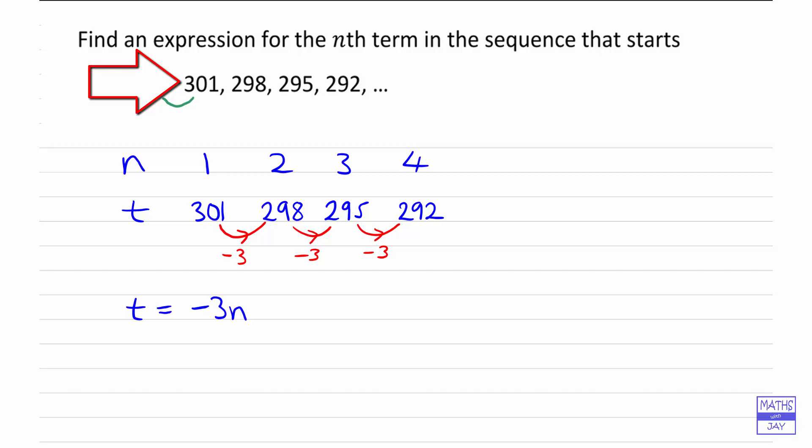Well, instead of subtracting 3 from it, we'd need to add 3 on, wouldn't we? So going in the opposite direction, we're adding 3 instead of subtracting 3. So the number that we would have before 301 would be 304, and that is what we need to add on to get the nth term.